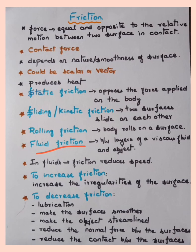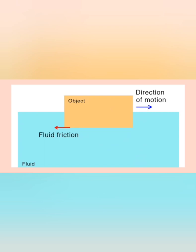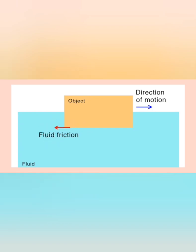In the case of fluid friction, this friction exerts a force to reduce the speed of an object. Fluid friction acts between the layers of a viscous fluid and the object. Imagine an object moving through a liquid or fluid — if the direction of motion of the object is in one direction, fluid friction acts in the opposite direction. Hence, fluid friction reduces the speed of an object.